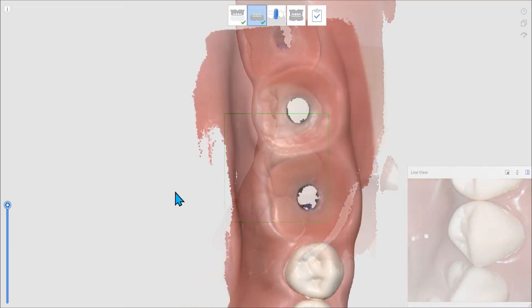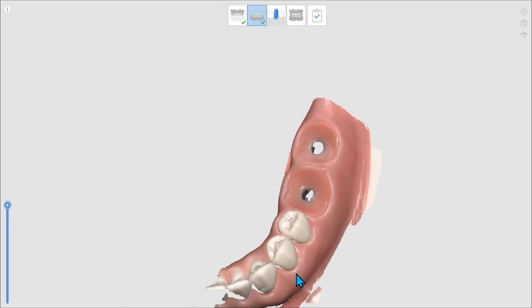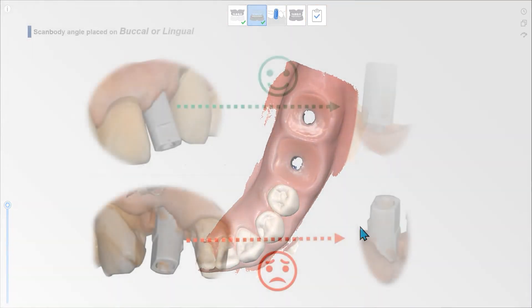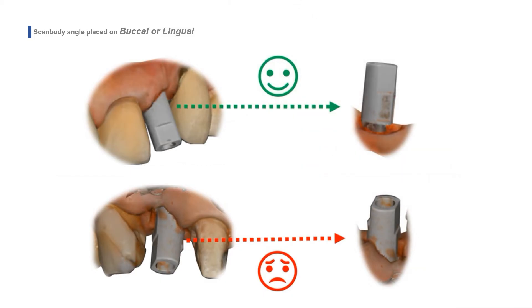Once scanning is done for both maxilla and mandible, please engage the ScanBody with the implant. The flat side of the ScanBody should face either the buccal or the lingual as CAD designers will mark matching points on it.